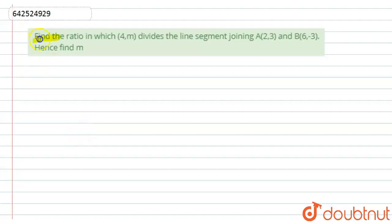Hello student, let's start with the question. Here we have given, find the ratio in which (4,m) divides the line segment joining the points A(2,3) and B(6,-3), and hence find the value of m.